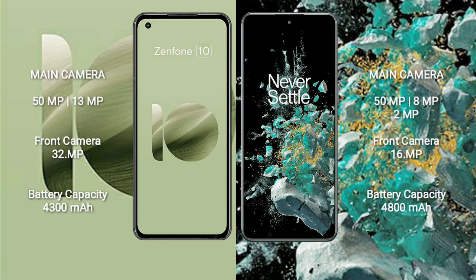Asus Zenfone 10 has a rear dual camera setup with 50MP plus 13MP, and a front camera of 32MP. OnePlus 10T has a rear triple camera setup with 50MP plus 8MP plus 2MP, and a front camera of 16MP.